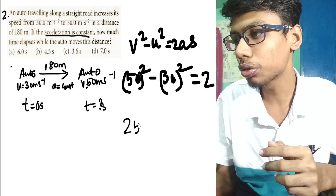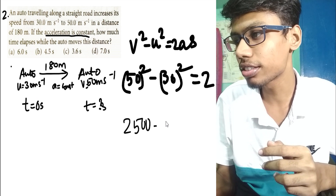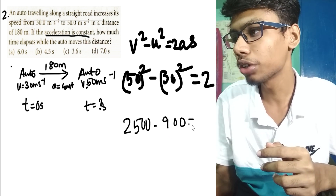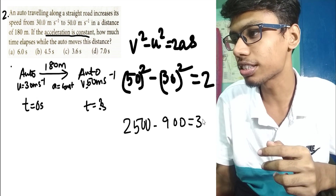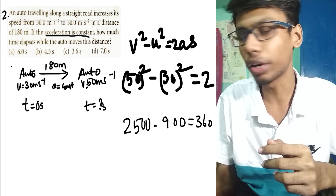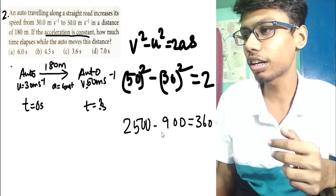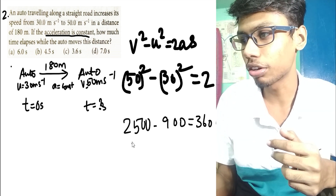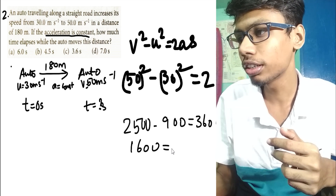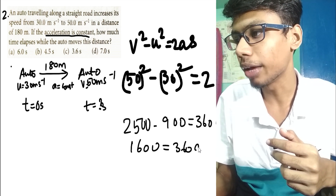Solving: 2,500 minus 900 equals 360 times a. So 1,600 equals 360 times a, giving a equals 1,600 divided by 360, which simplifies to 40 divided by 9 ms⁻².